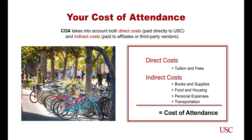The cost of attendance is not limited to just your tuition. It also includes other expenses that you may come across that are associated with being a student. For example, tuition and fees, which are paid directly to the university, are referred to as direct costs. You then have other expenses that you may come across, such as housing, dining, books and supplies, and transportation, which are known as indirect costs. You may be able to utilize your financial aid to assist you in covering some of these indirect costs throughout the duration of your program.